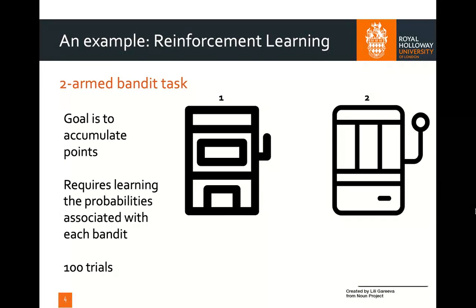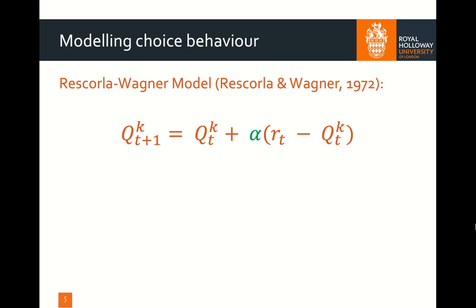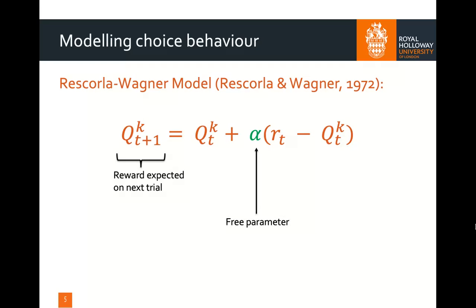I'm going to set the probabilities on these bandits to have a 75% chance of getting a reward on bandit one, and a 25% chance on bandit two. The equation on screen at the moment is known as the Rescorla-Wagner model, a simple model that helps us explain how participants learn the probabilities associated with both slot machines in the two-arm bandit task. Q is the actual reward that participants have experienced, K is the particular bandit chosen, and T means trial. On the furthest left, we have the expected reward from option K on trial T plus one, which is equal to the reward experienced on the previous trial. The alpha value shown in green is a free parameter — one of these parameters that can vary between participants — and in this case is known as the learning rate.